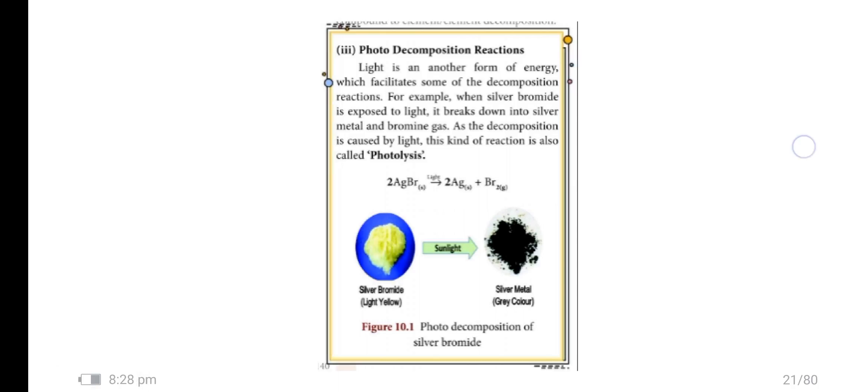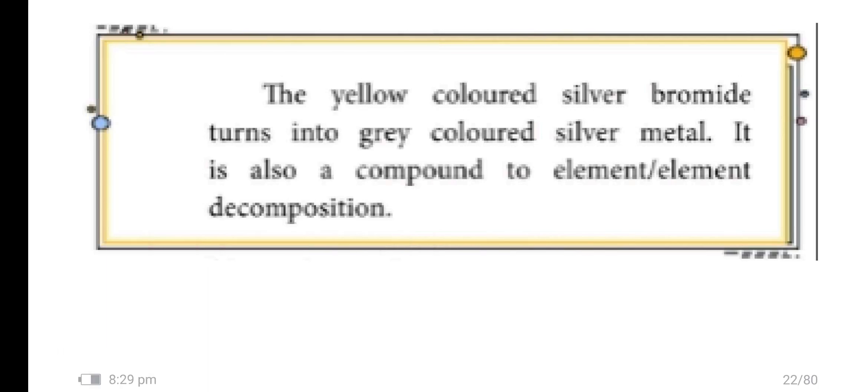Photo decomposition reaction. Light is another form of energy which facilitates some decomposition reactions. For example, when silver bromide is exposed to light, it breaks down into silver metal and bromine gas. As the decomposition is caused by light, this kind of reaction is also called photolysis. The yellow colored silver bromide turns into gray colored silver metal. It is also a compound to element-element decomposition.